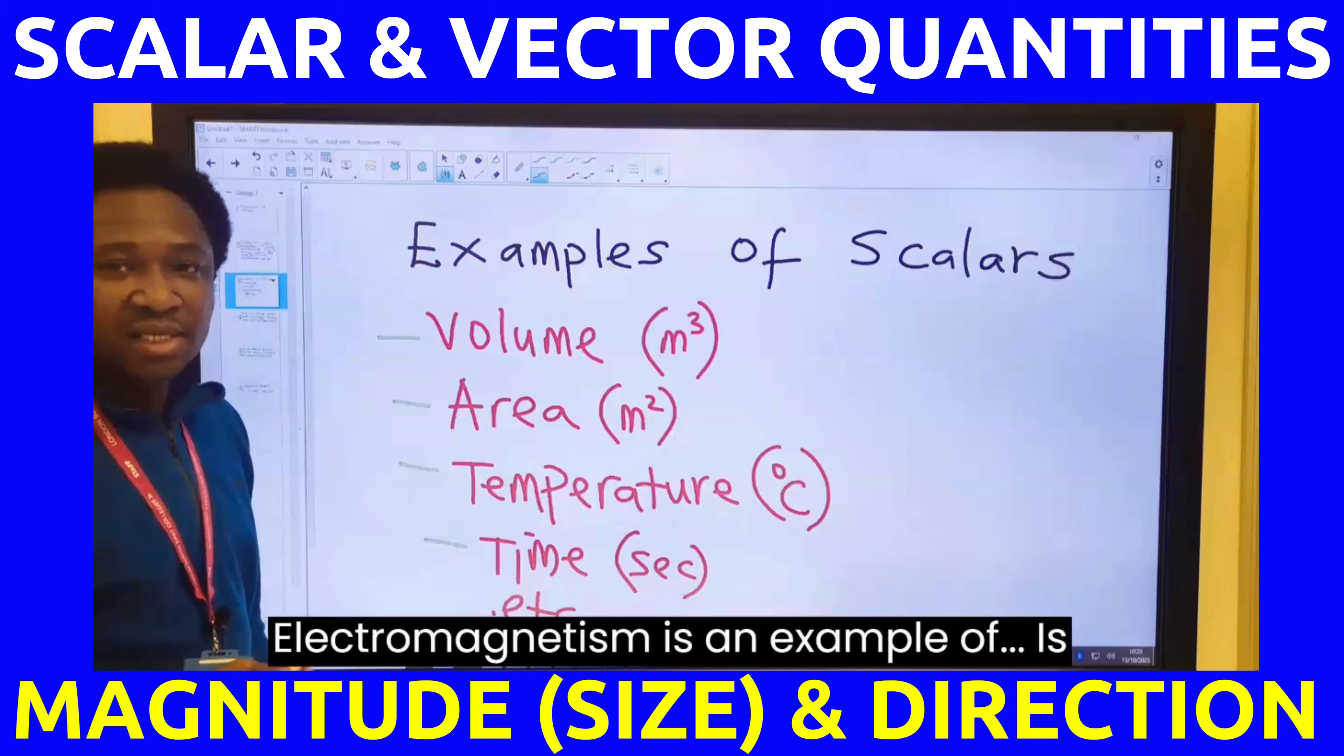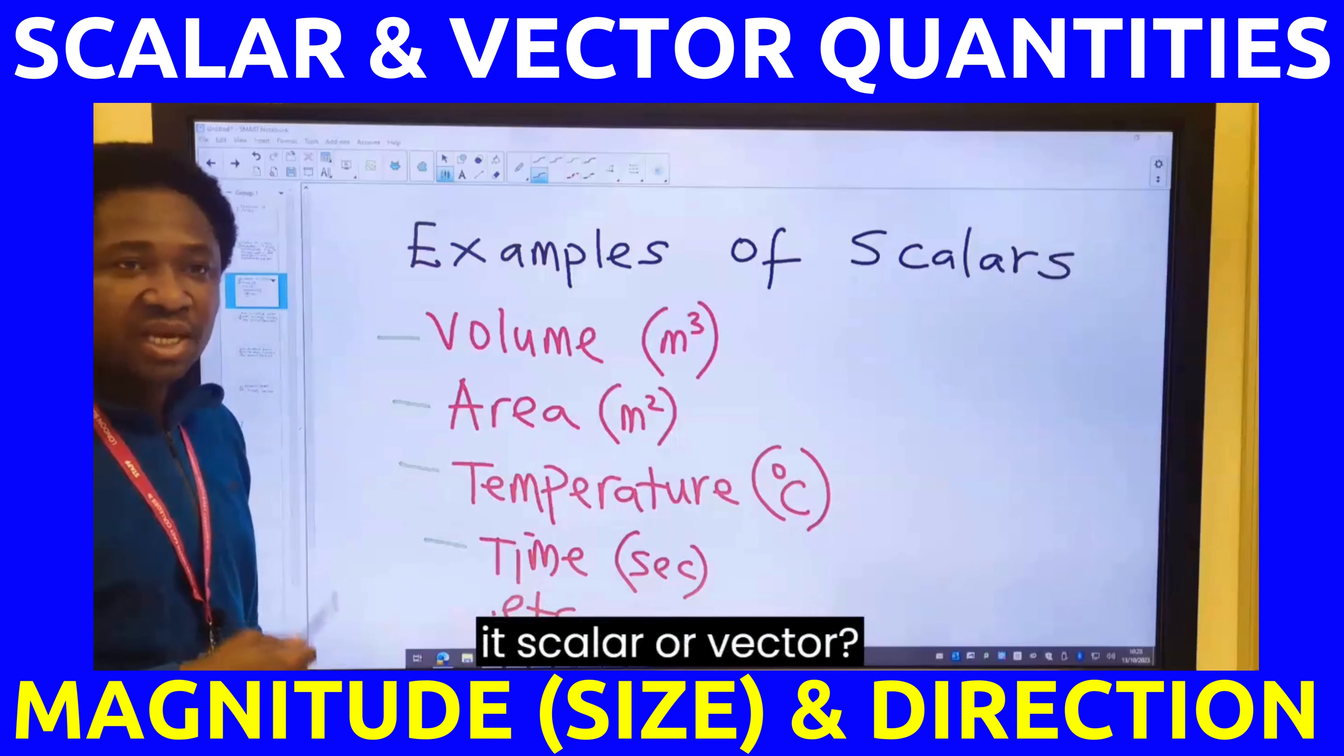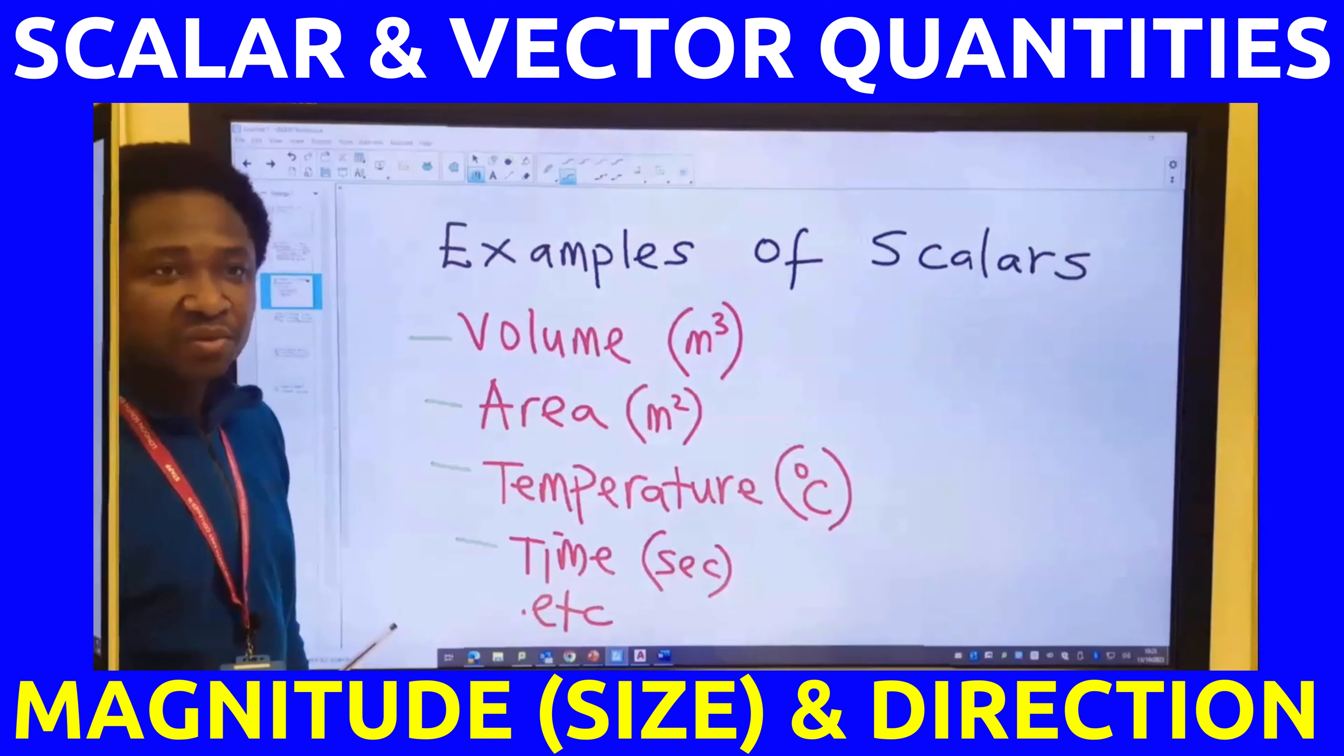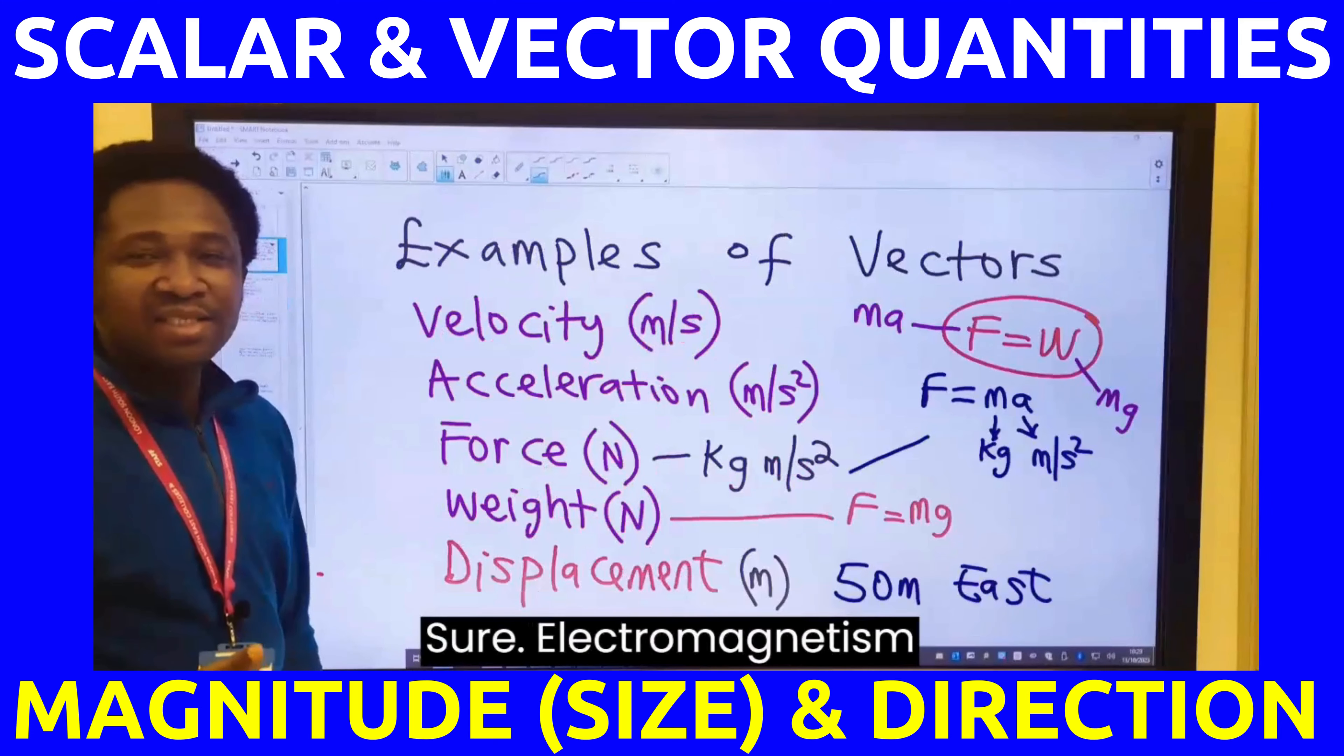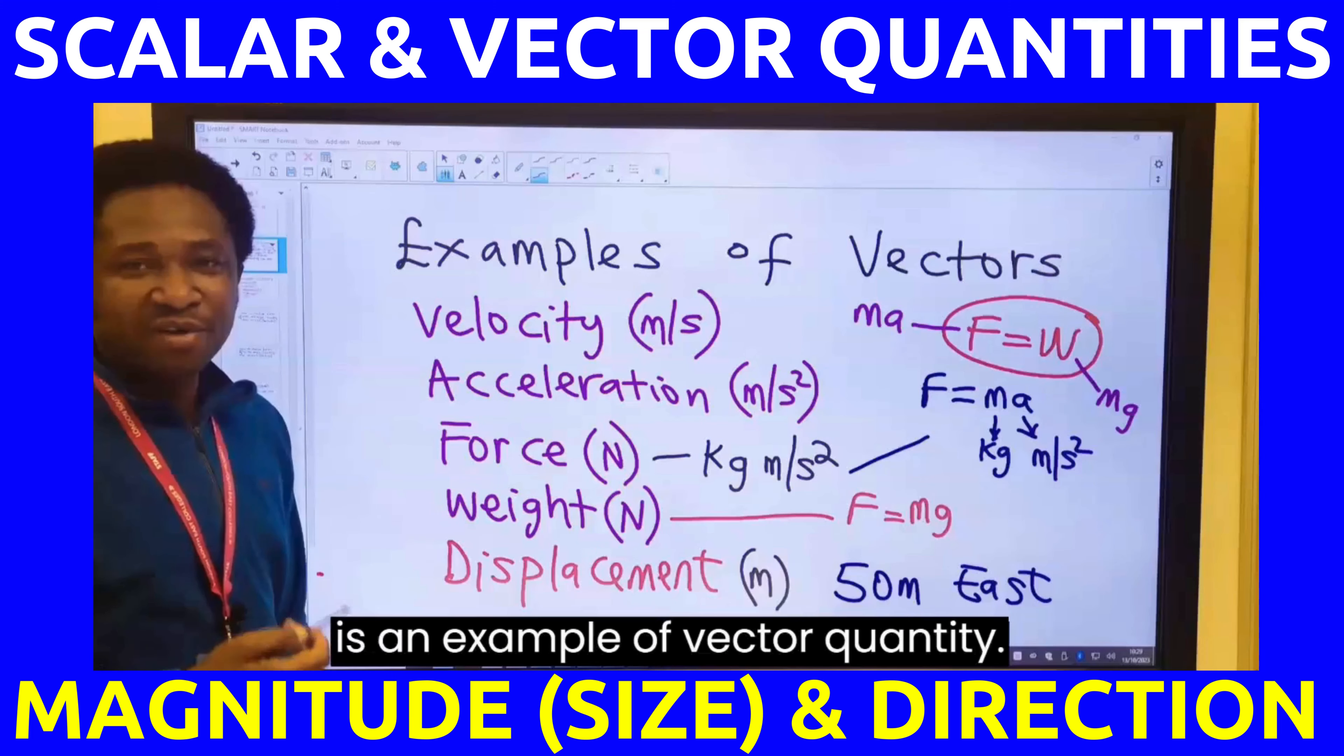Electromagnetism is an example of... Is it scalar or vector? Electromagnetism is an example of vector quantities.